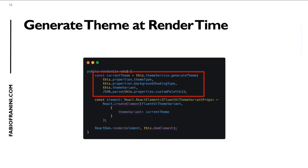In the render method, we need to generate the current theme by using the generateTheme method of the ThemeService class. When we have this object, we pass this theme — it's a theme variant — to the React control or the component that you want to use to render your web part.